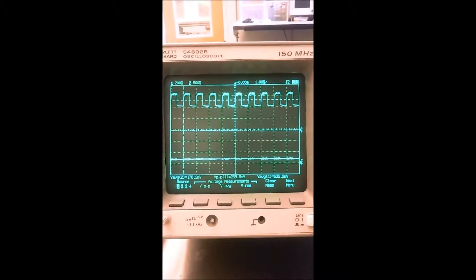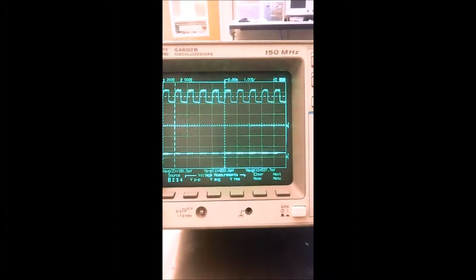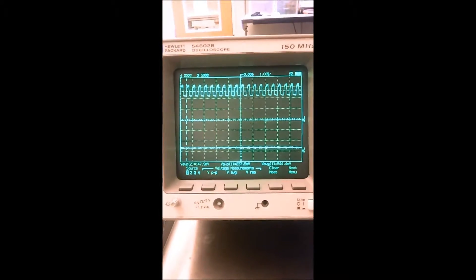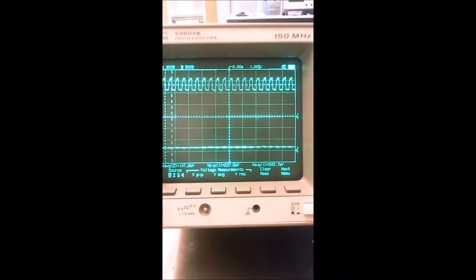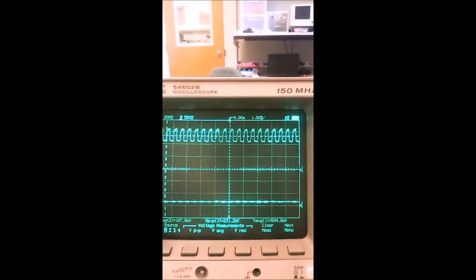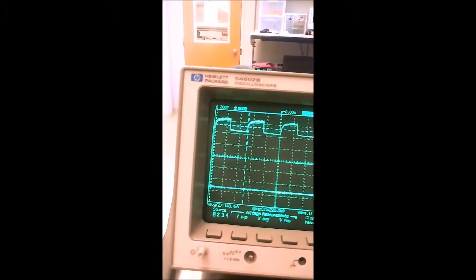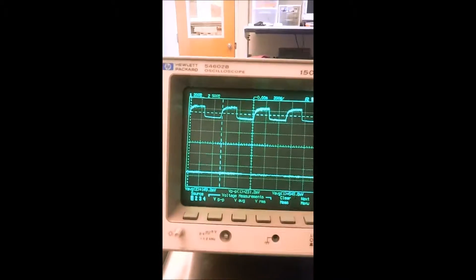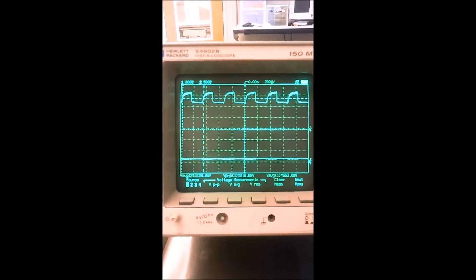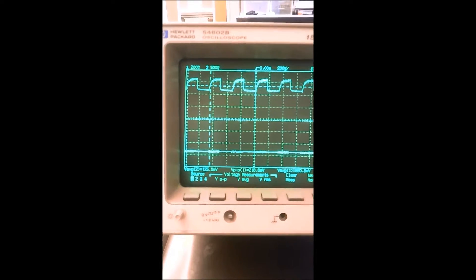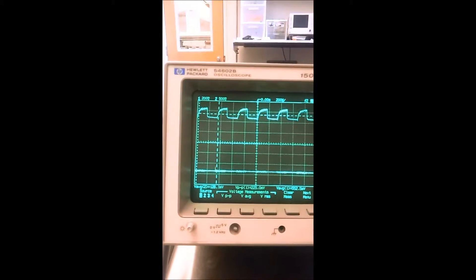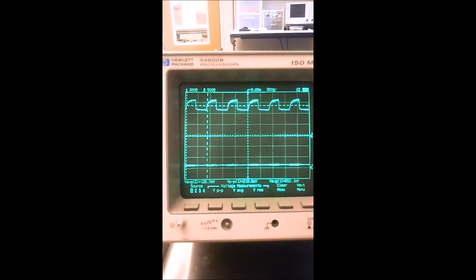Now we're gonna increment in one kilohertz increments. This is 2k, you can see the low-pass filter signal drop to 150 and the distortion now is very obvious. Let's see if we can go further. So 3k, it's now 130 millivolts at the low-pass filter frequency.